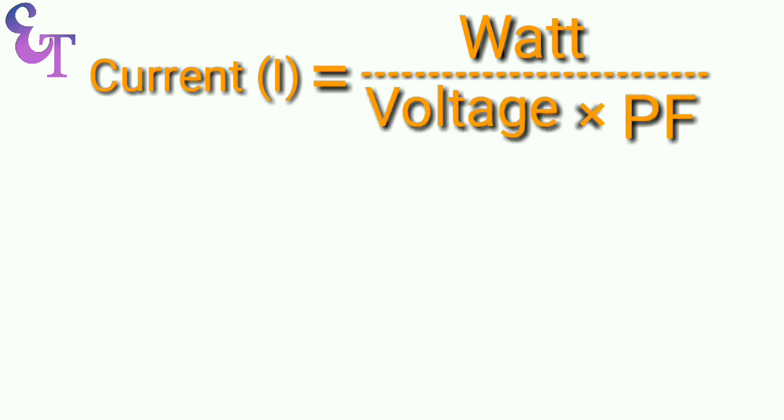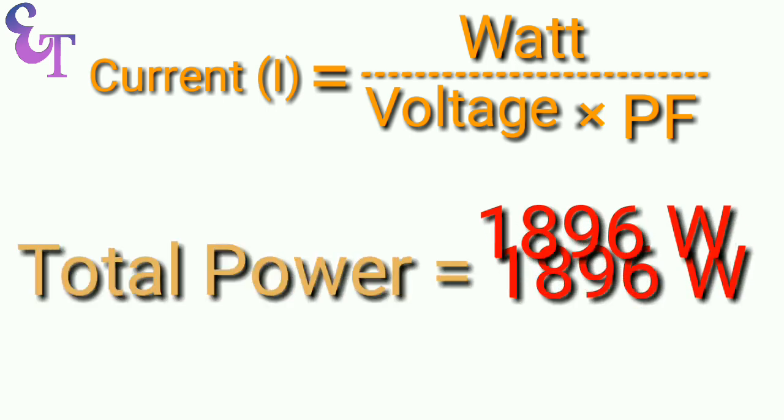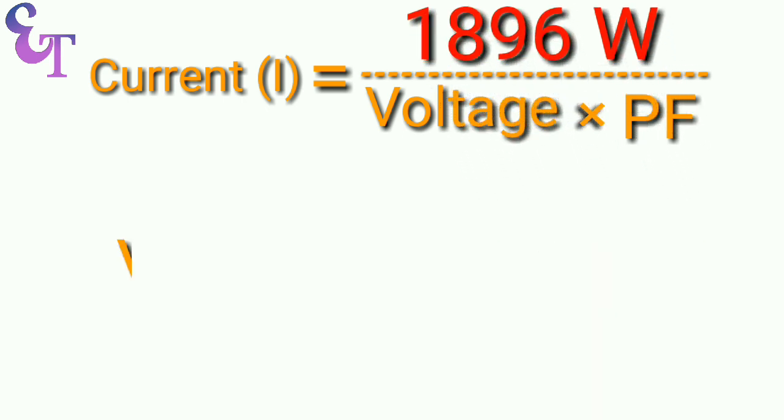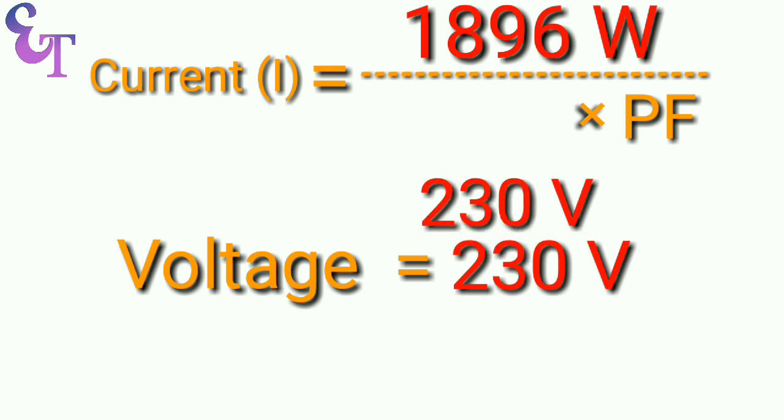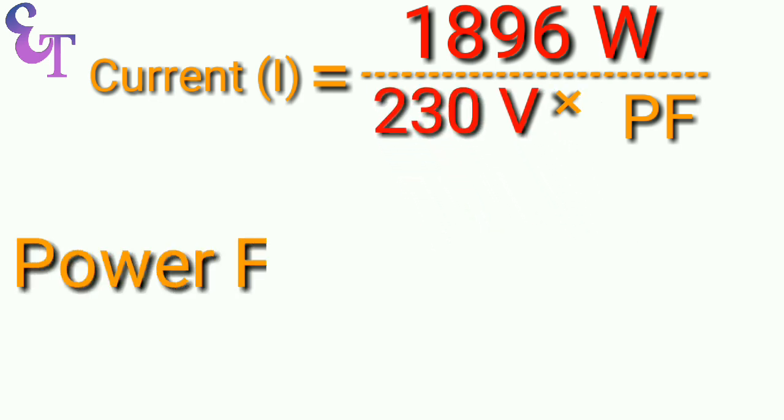Let's calculate the current. We know that the total power consumption is 1896 watts. The voltage in our house is normally 230 volts, and the power factor of home appliances is normally 0.8.